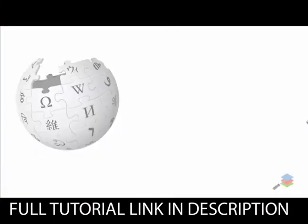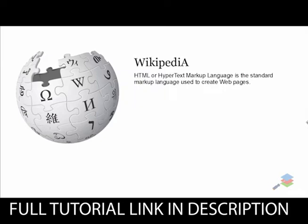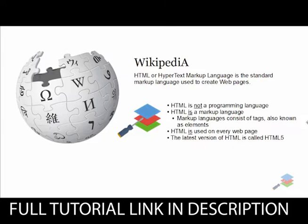Getting started — what is HTML? Well, according to Wikipedia, HTML or Hypertext Markup Language is a standard markup language used to create webpages, and that's very true. But HTML is more than just that. HTML is not actually a programming language — a lot of people think it is. It's actually considered a markup language. Markup languages consist of tags, also known as elements. They have opening and closing tags, and they have attributes. HTML is used on every single webpage. If you've ever gone to Twitter, Facebook, Google, or really any website — even websites that have Flash on them, such as YouTube — it still uses HTML to embed that Flash. The latest version of HTML is called HTML5, and HTML is really the backbone structure of how everything is designed on a webpage.